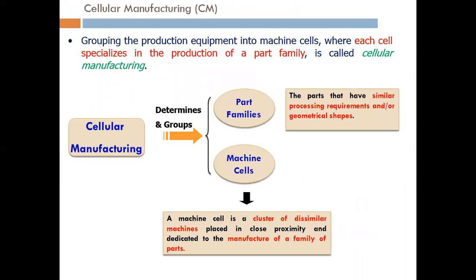Now the other basic concept we have already covered is cellular manufacturing. Cellular manufacturing is an application of group technology in which we group production equipment that has similarities in design to execute operations on part families. The parts that have similar processing requirements for geometrical shape are grouped. Machine cells are clusters of dissimilar machines placed in close proximity and dedicated to the manufacturing of a family of parts.